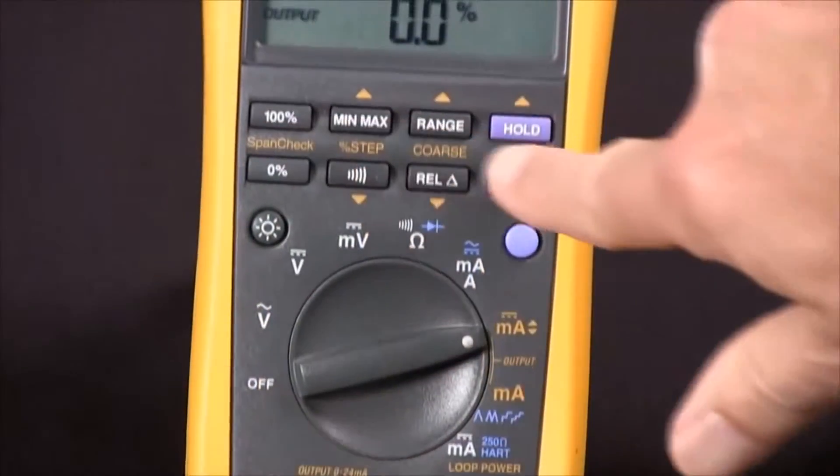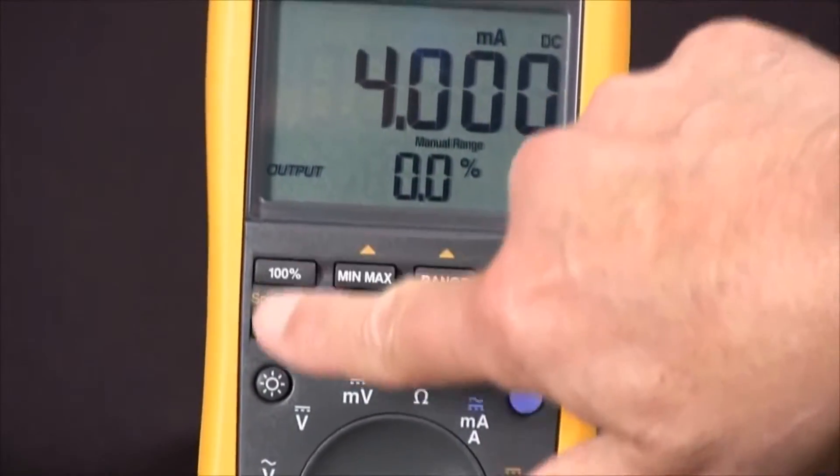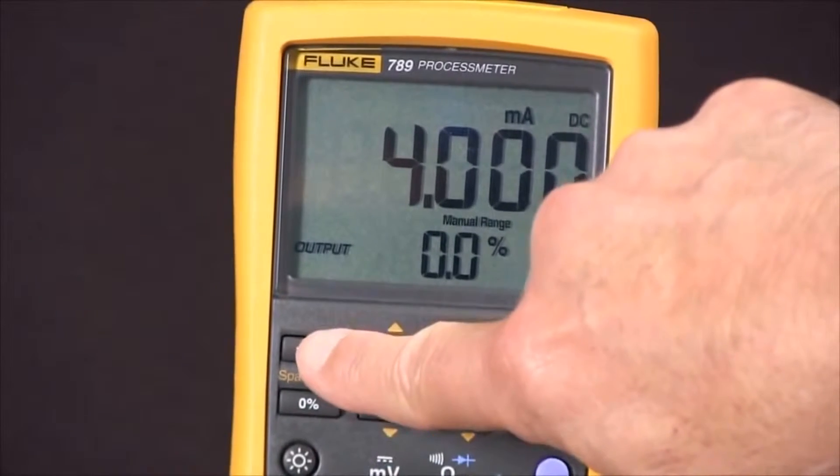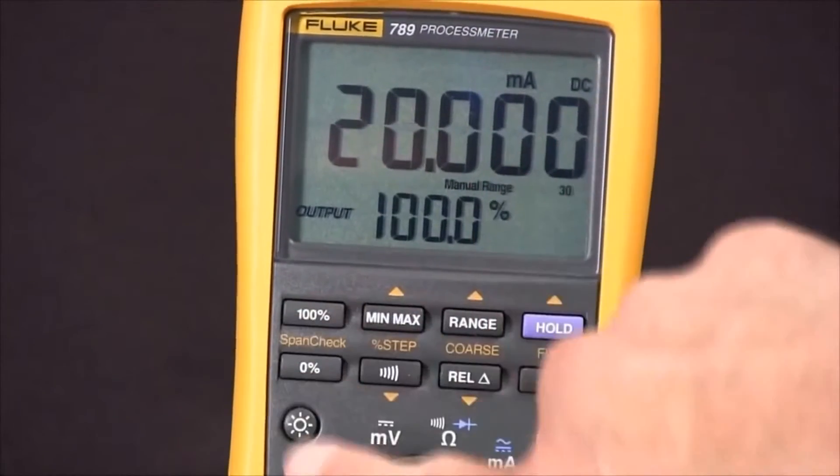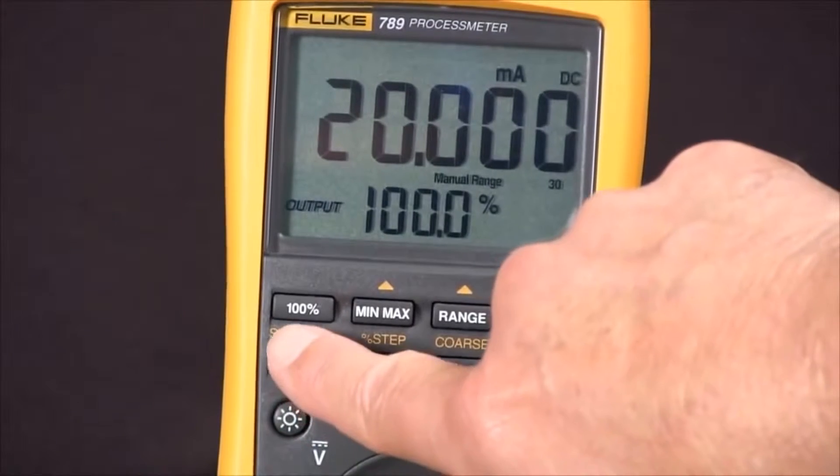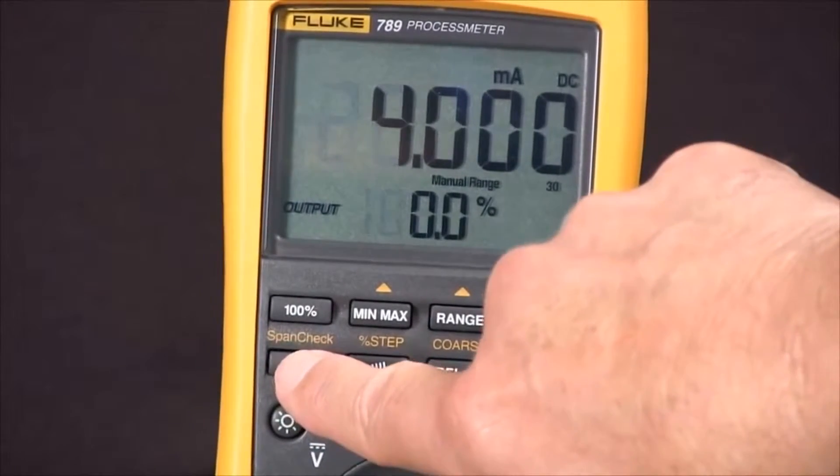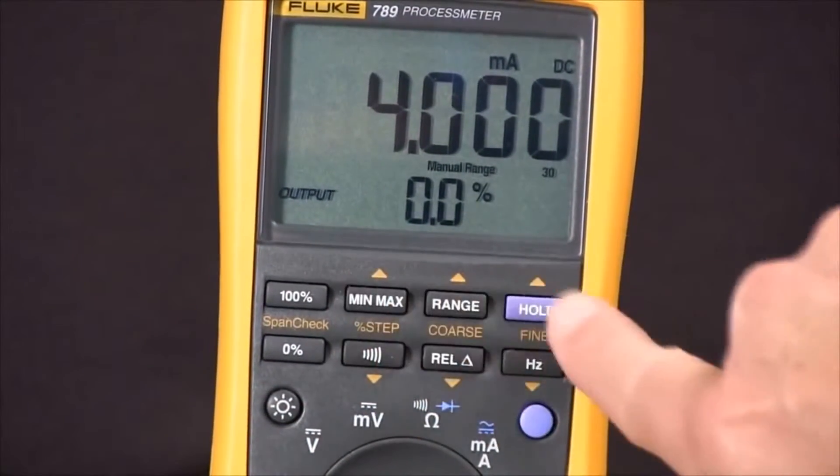We can start over here with the span check and we can go from zero percent of span to 20 milliamps or 100 percent of span or zero. And then with these three we can do 25 percent of span coarse or fine adjustments.